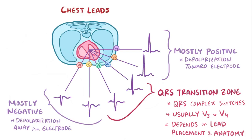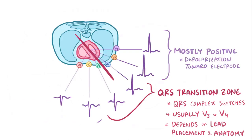The QRS transition tells us when the overall QRS vector is aligned in the direction of the chest leads. It's kind of like a way of understanding what's happening to the QRS axis on the horizontal plane.